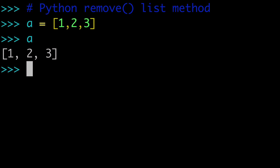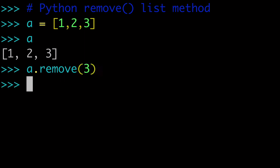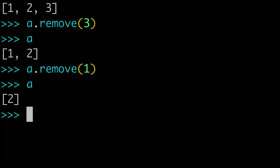The remove method would look like this: we type a.remove(), and then we need to pass an argument — the value that we want to remove from the list. So if I pass 3, we're going to remove 3. And if I check a again, we only have 1 and 2. We'll run this again and remove 1, and now we only have 2 remaining. We have removed two elements from this list.